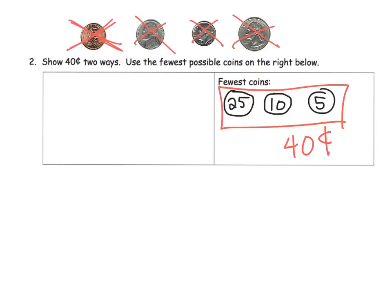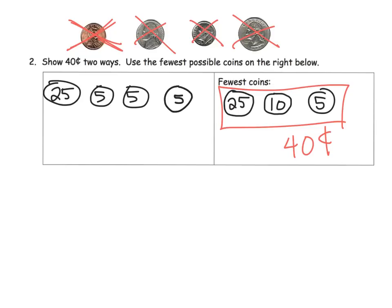Now if we want a different way that does not use the fewest coins, all we have to do is cash in one of these coins for some smaller coins. For example, we could cash in that dime for two nickels. So we'd have a quarter, two nickels instead of the dime, and that last remaining nickel. That's another option — it still equals 40 cents but uses more coins.